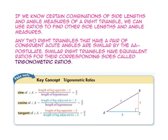Let's take a look at the trig ratios. The sine of angle A is the length of the side opposite angle A to the length of the hypotenuse. Cosine of angle A is the length of the side adjacent to angle A to the length of the hypotenuse. And tangent of angle A is the ratio of the length of the side opposite angle A to the length of the side adjacent to angle A.